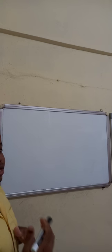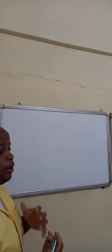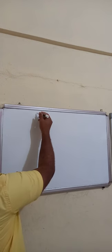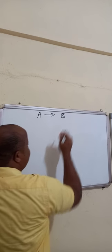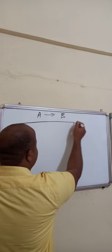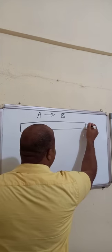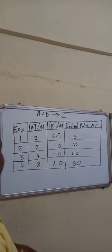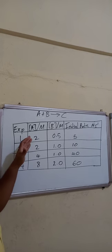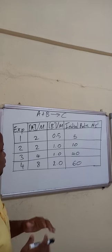To determine the order of a reaction, we can only do it experimentally. Let's consider a hypothetical reaction: A produces B. Now I'll use a table where we do a series of experiments with two reactants, to see how the rate is affected by varying the concentration, so we can compare how each reactant affects the rate.